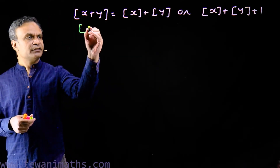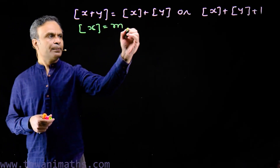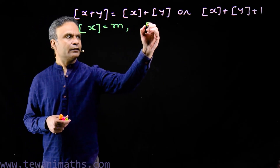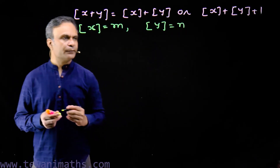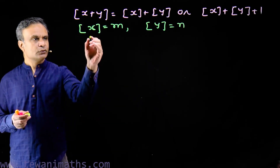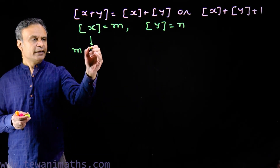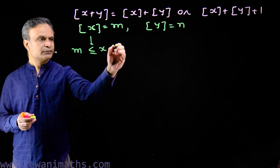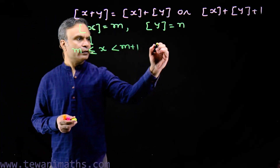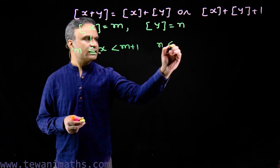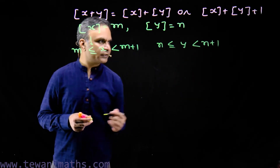Let's prove. Suppose the greatest integer of x is equal to m and the greatest integer of y is equal to n. So we have m less than or equal to x less than m plus 1, and n less than or equal to y less than n plus 1.